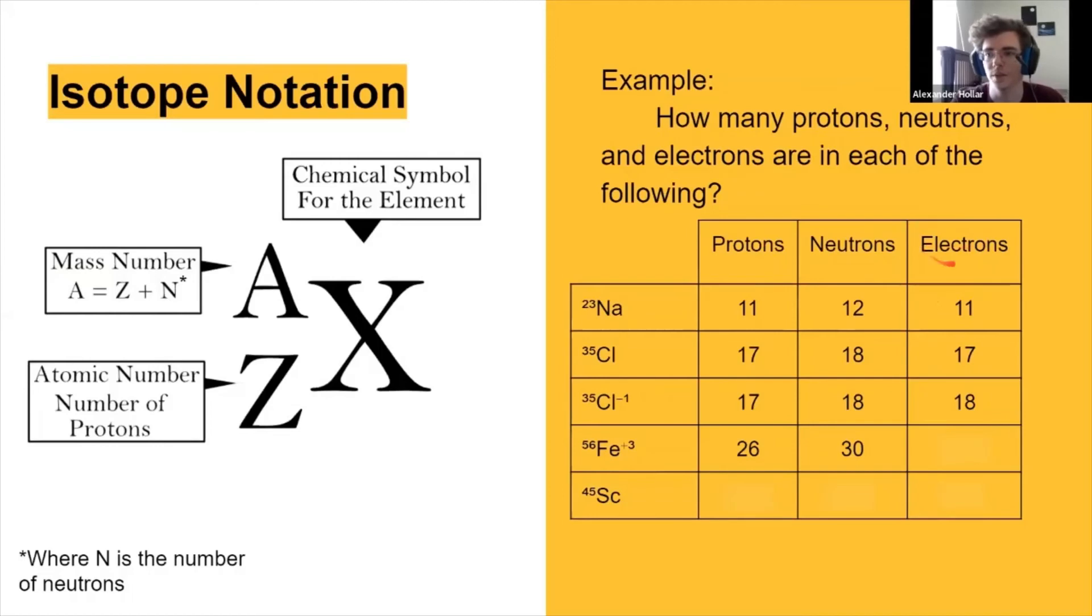And this is where it gets really tricky. How many electrons do we have if it's positive 3? 29? No. See, that's where it's a little tricky.